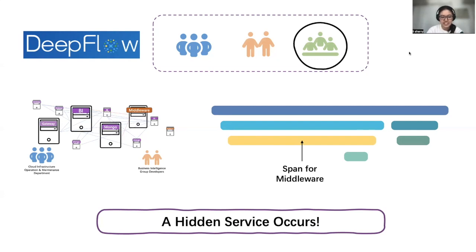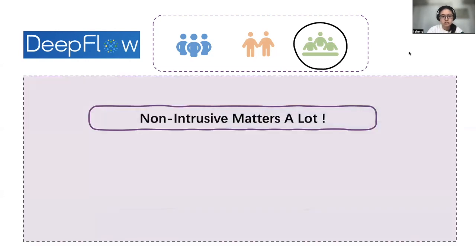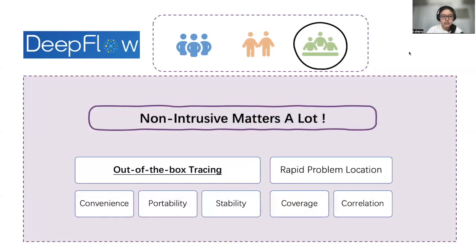Because of the troublesome code changes required, a patient team's effort to improve observability isn't always supported by other developers. But with DeepFlow's non-intrusive, out-of-the-box tracing ability, no further effort will be required from the application developers' team. There are also other non-intrusive or automatic tracing tools, but they fail to meet other requirements such as portability. A detailed discussion can be found in our paper.